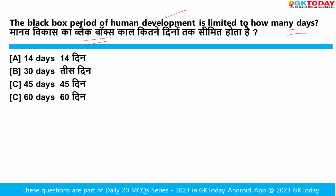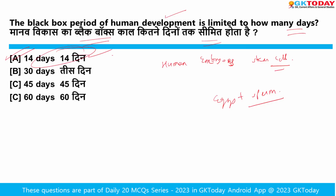The Black Box period of human development is limited to how many days? Researchers have generated artificial human embryos using stem cells, removing conventional requirements. These embryos resemble early stages of human development and could provide a crucial window into genetic disorders and biological causes of recurrent miscarriage. The Black Box period is limited to 14 days under current regulation.